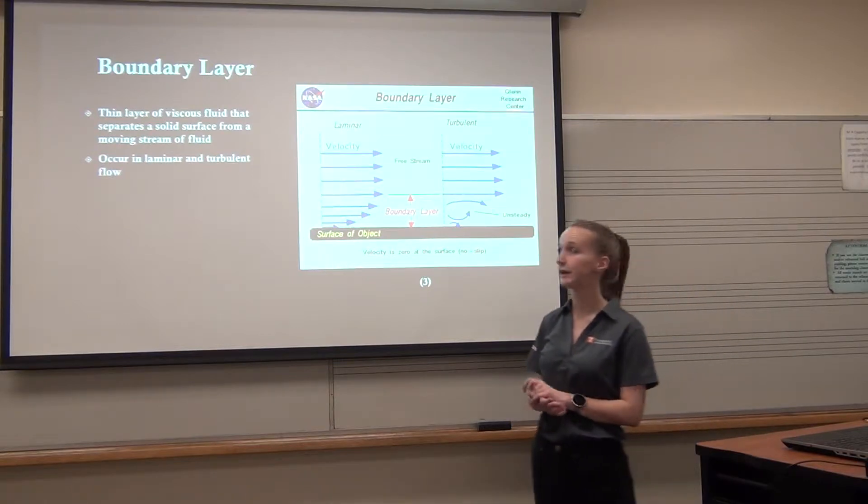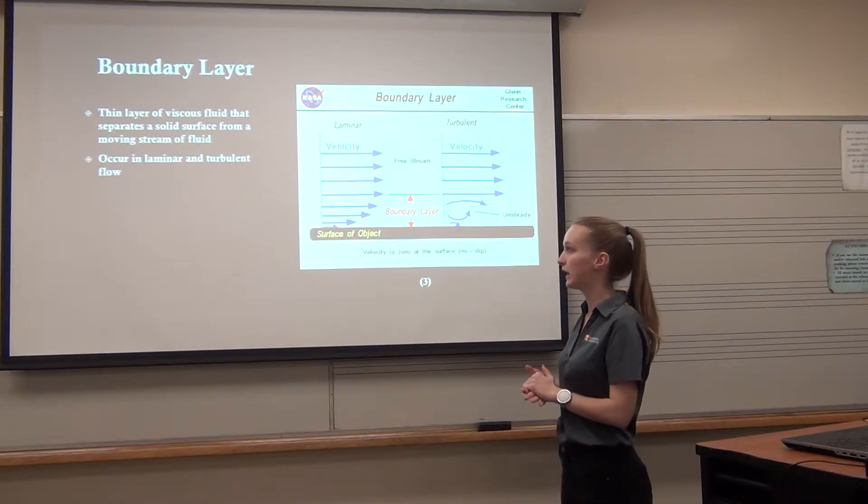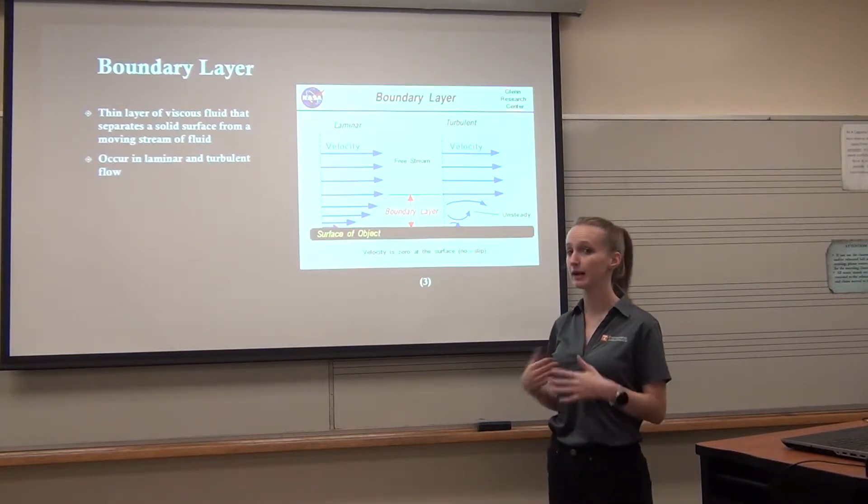Boundary layers are thin layers of viscous fluid that separate a solid surface from a moving stream of fluid. These are easily seen in wind tunnel experiments. They occur in laminar and turbulent flow.